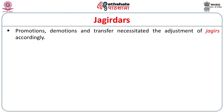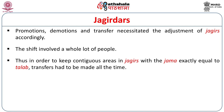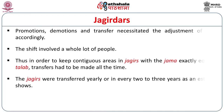Promotions, demotions, and transfers had to be adjusted in this system. In order to keep contiguous areas in Jagir with the Jamma exactly equal to the Talab, transfers had to be made all the time. This was done to keep the system transparent, but as the empire grew, it became more and more complicated. The Jagirs were transferred yearly or every two to three years, as estimates from records show.